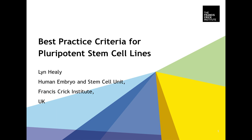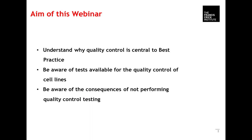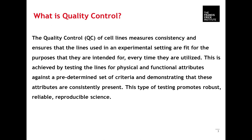Thank you, Kristi, for that introduction. Today I'd like to talk about best practice criteria for pluripotent stem cell lines. The aim of this webinar is to understand why quality control is central to best practice, to be aware of tests available for quality control of cell lines, and to be aware of the consequences of not performing quality control testing. Quality control of cell lines measures the consistency and ensures that lines used in an experimental setting are fit for purpose every time. This is achieved by testing lines for physical and functional attributes against a predetermined set of criteria, thereby demonstrating that these attributes are consistently present — promoting robust, reliable, reproducible science.